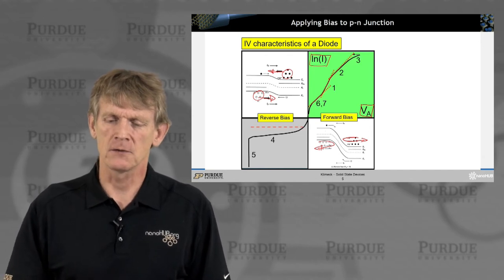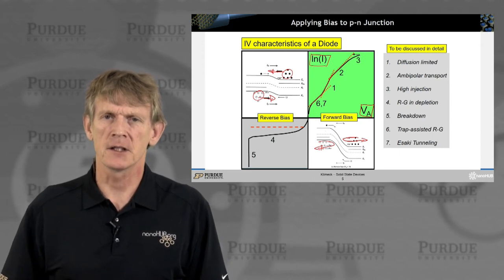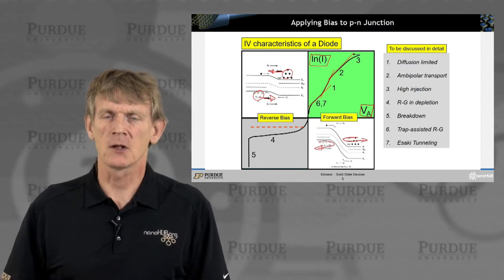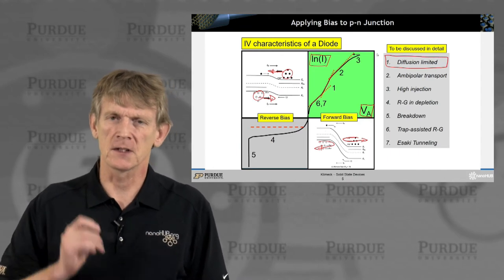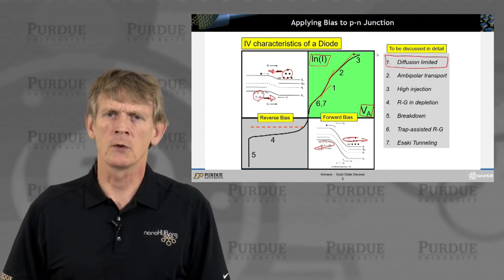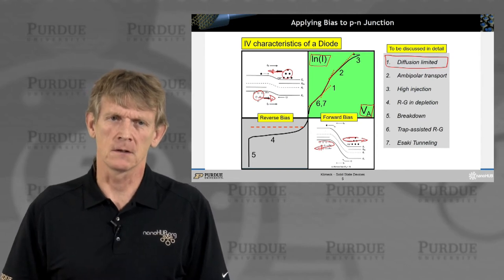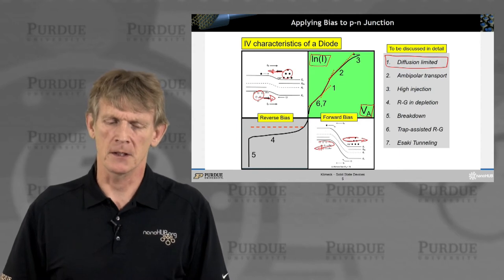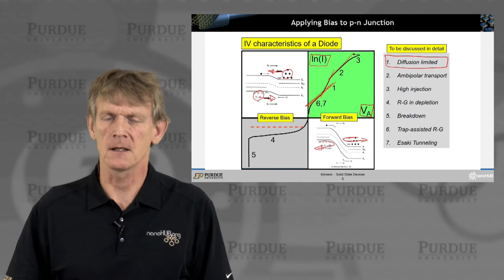In fact, we'll talk about these various regions in detail. So we'll start out with a diffusion-limited device where the slope is 1. That's the first one we tackle. And then throughout this lecture set, we will migrate through all of these imperfections or deviations from this ideal diffusion-limited behavior that has slope 1 as indicated here.